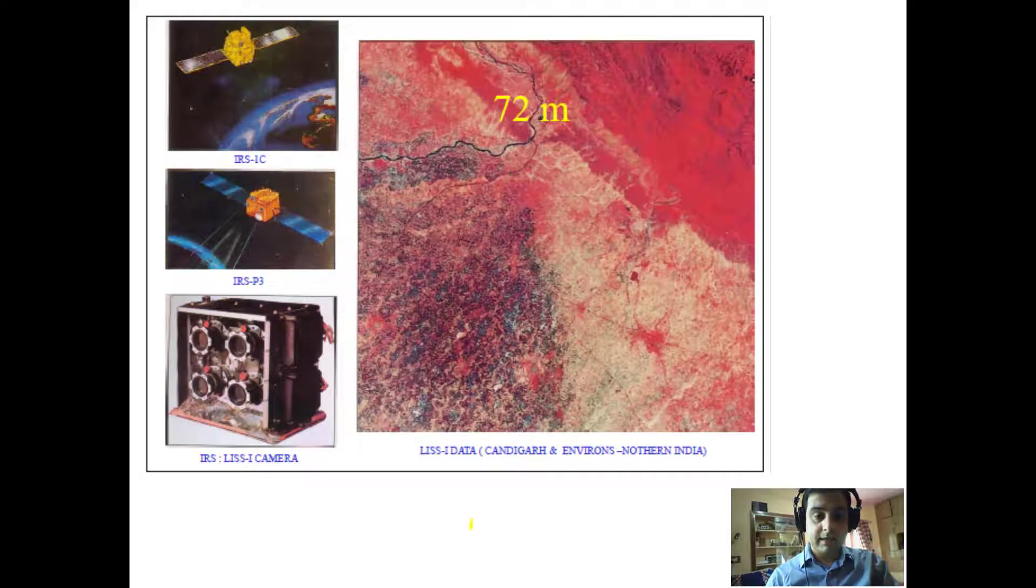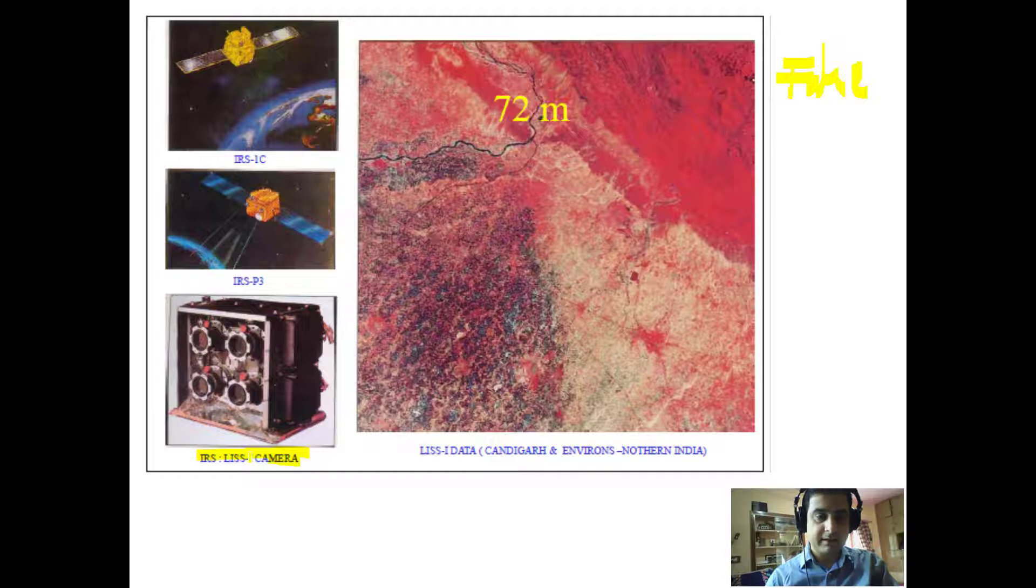This is a look of false color composite, this is a satellite image but with a false color. We will talk about this false color in the coming lectures. This is LISS 3 camera, this is one of the sensors of Indian remote sensing satellite LISS 1 camera, and this is the image captured by this sensor.